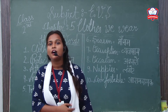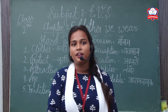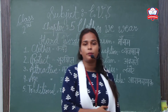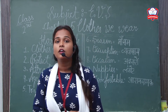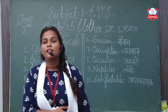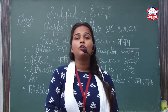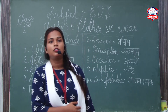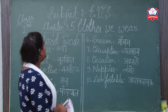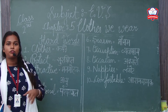Before I start the chapter, I ask one question: what are the basic needs of human beings? The first need is food, the second need is shelter, and the third need is cloth. Today we are starting about cloth. The chapter name is fifth — 'The Cloth We Wear' — this is the fifth chapter.